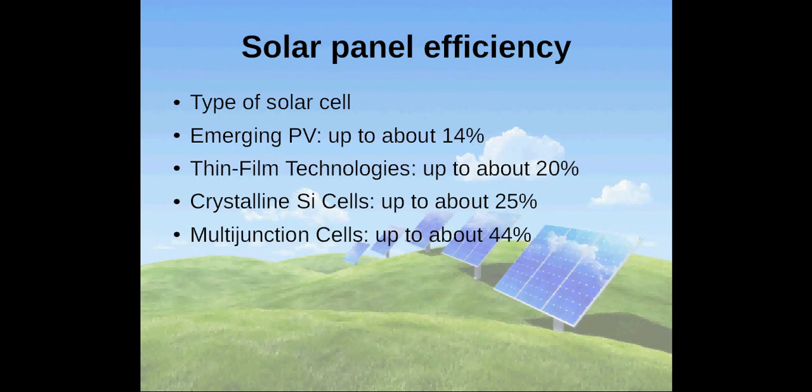Efficiency also depends on the type of solar cell. Emerging PV converts up to about 14% of the sunlight into electricity. Thin film technologies up to about 20%. Crystalline Si cells up to about 25%. And multi-junction cells up to about 44%. The data comes from the National Renewable Energy Laboratory.